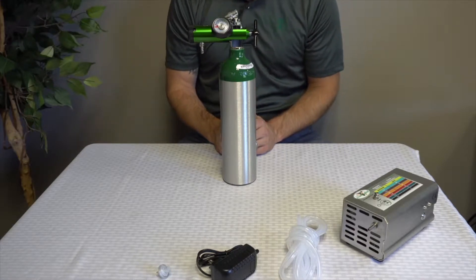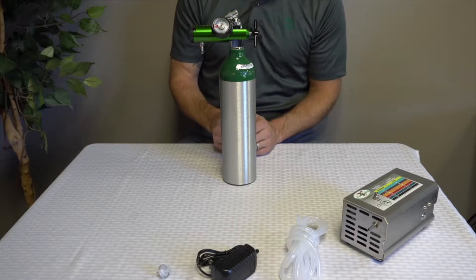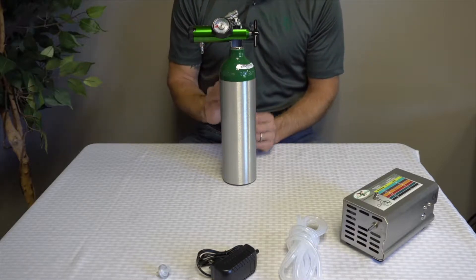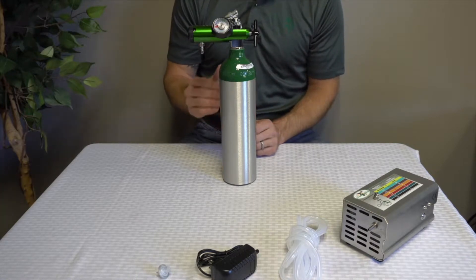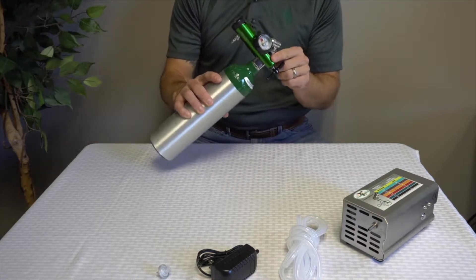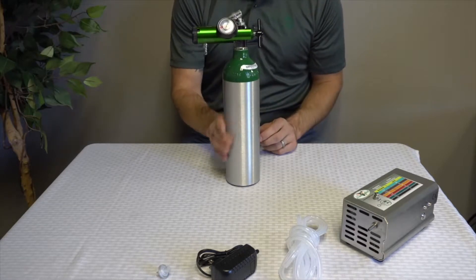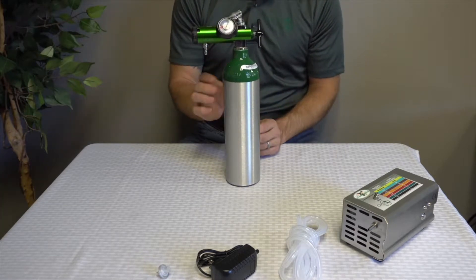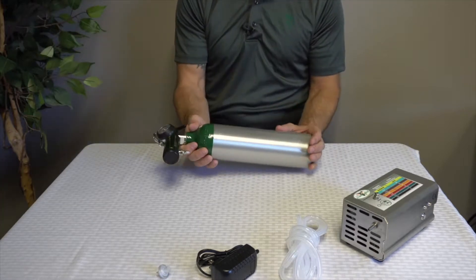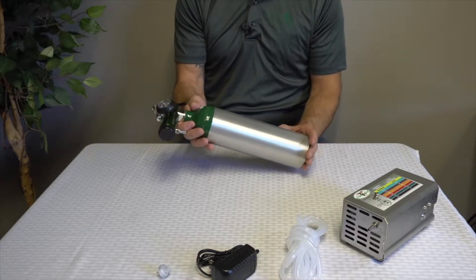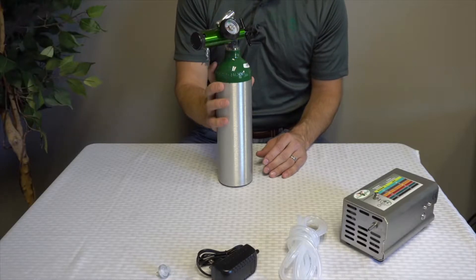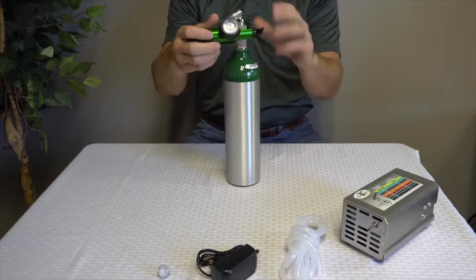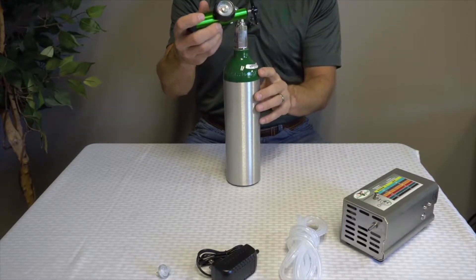If you choose an industrial tank, it will not fit in the kit. It will come separately and will have a different regulator that fits the industrial tank. We cannot ship the tanks with oxygen, so keep that in mind. When you receive it, it will be empty and you will need to find a local oxygen supply company to fill that. For our purposes here, this tank is full of oxygen.